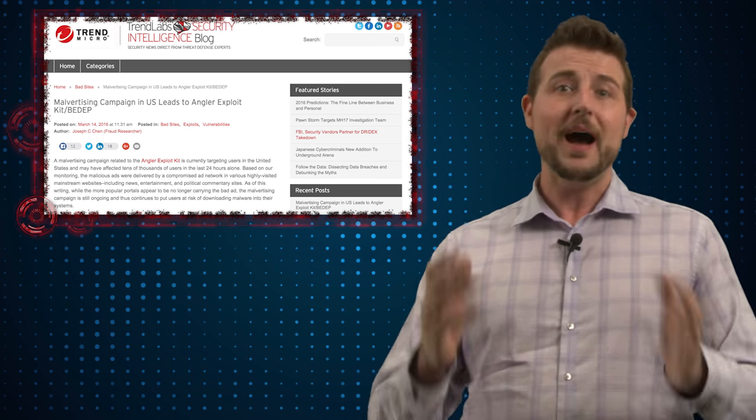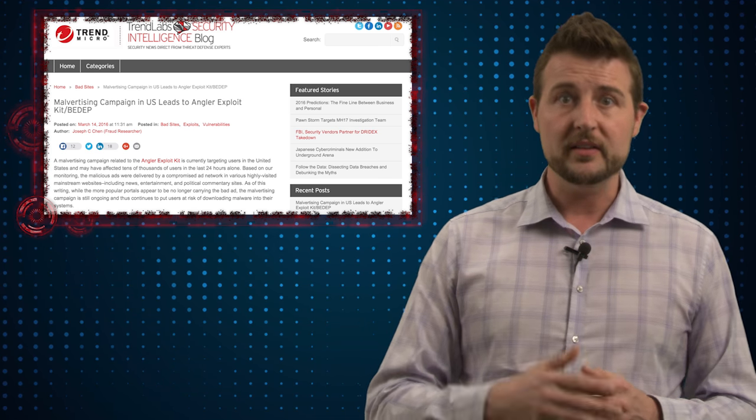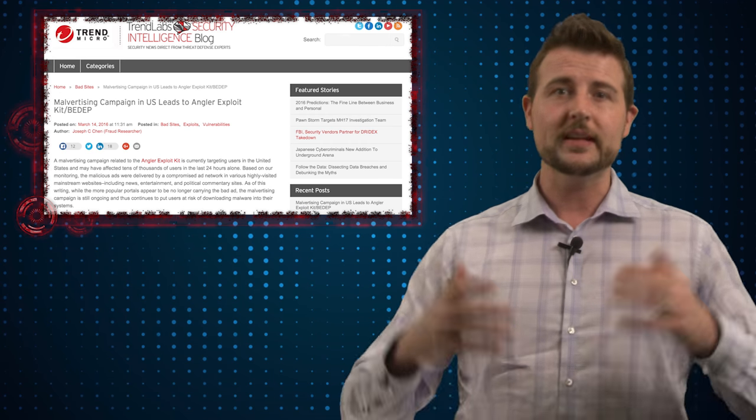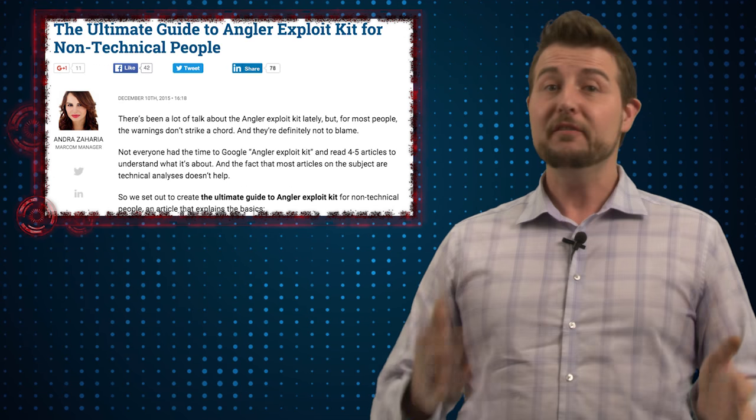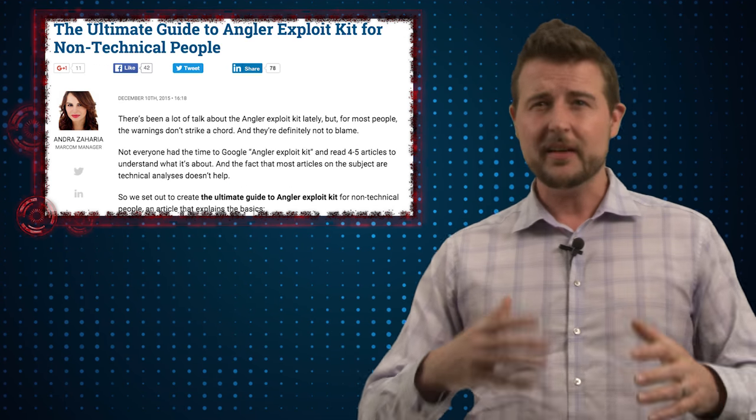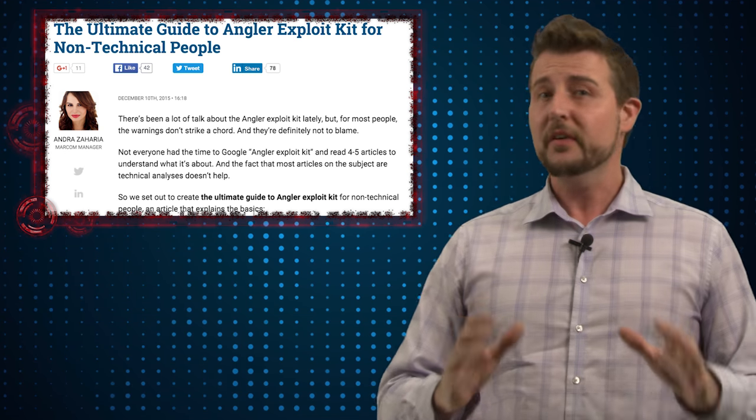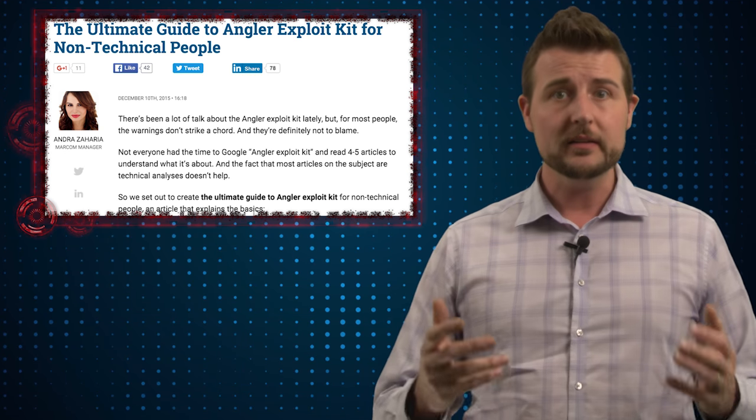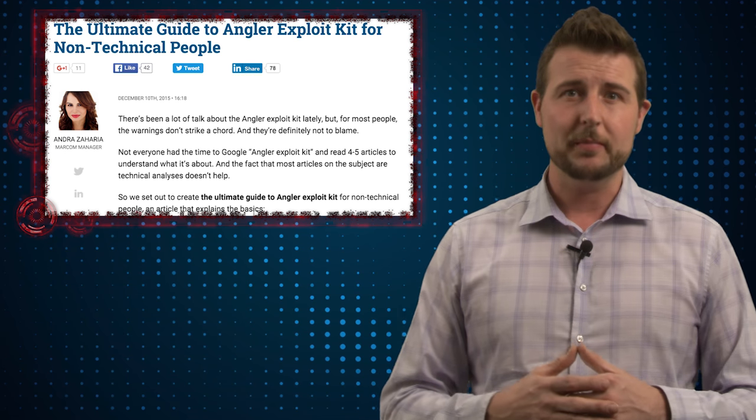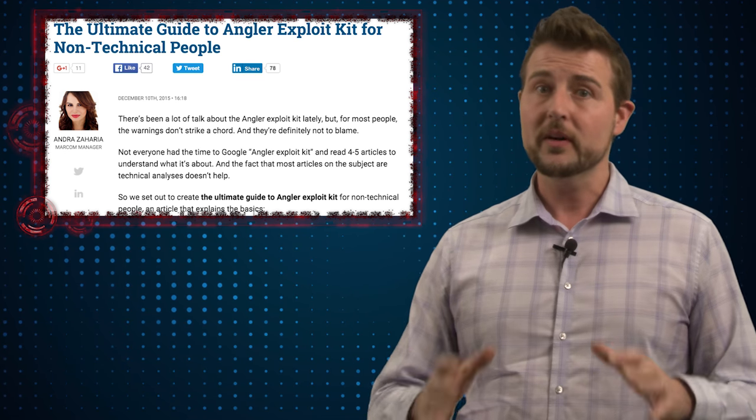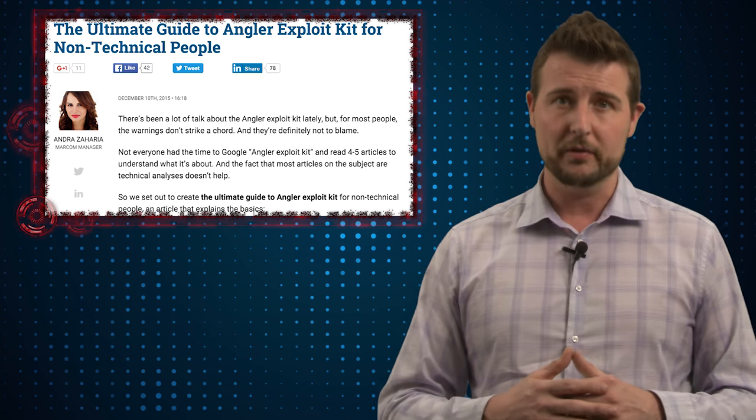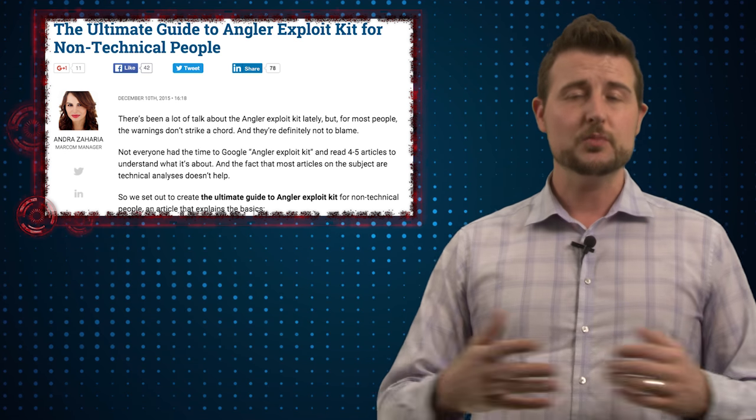Long story short, this malvertising that's showing up on sites is forcing victims to something called the Angler Exploit Kit. If you haven't heard of an exploit kit, this is a type of tool sold on the underground that makes it very easy for even unskilled attackers to leverage drive-by download kits. And Angler is one of the kits that's been very popular over the past few years and has gotten much more sophisticated.